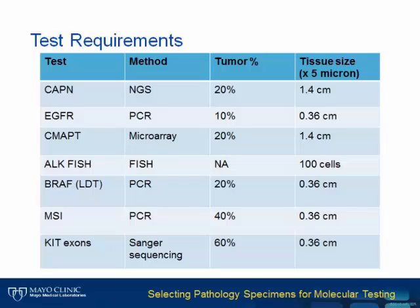Looking at this table of test requirements, FISH is something of an outlier. Because we are not extracting DNA, we can actually tolerate a smaller tumor percent, as the intact architecture helps identify the cells to be tested. So the cell count, rather than the amount or cellularity, is the more relevant metric for FISH. In terms of PCR-based assays, the different methods shown have widely varying requirements for tumor percent and tissue amount in order to obtain the necessary quality DNA for each test.